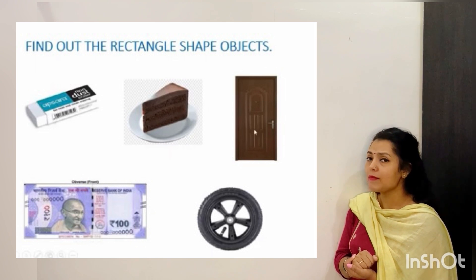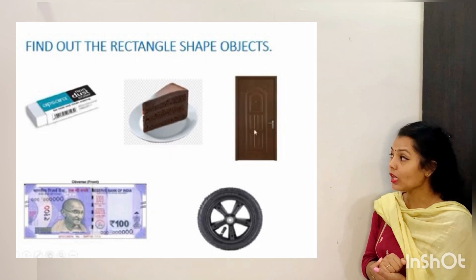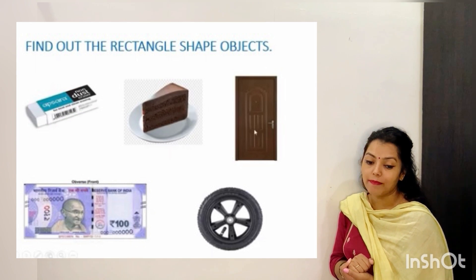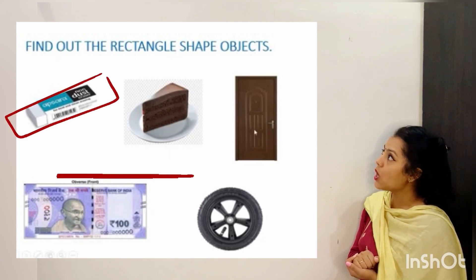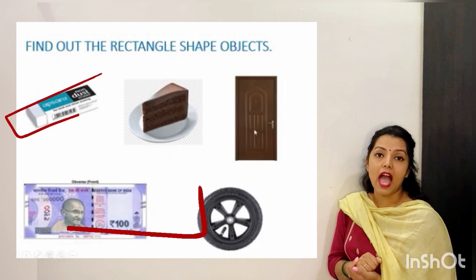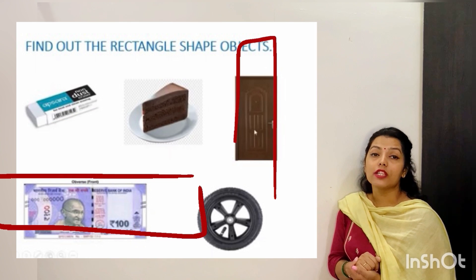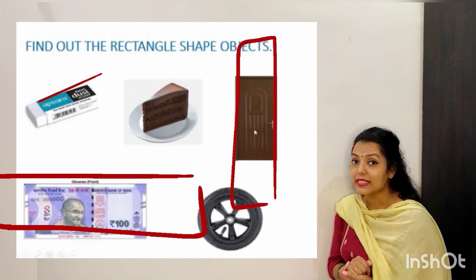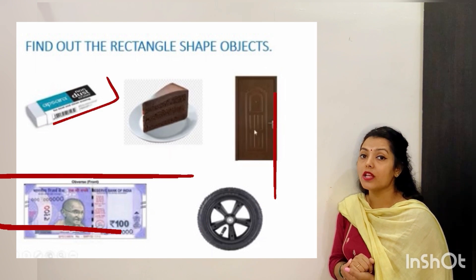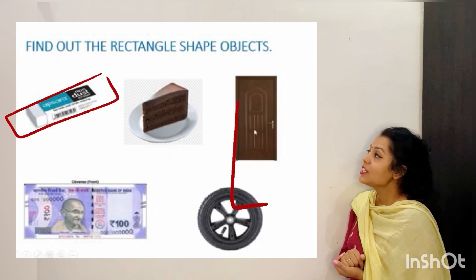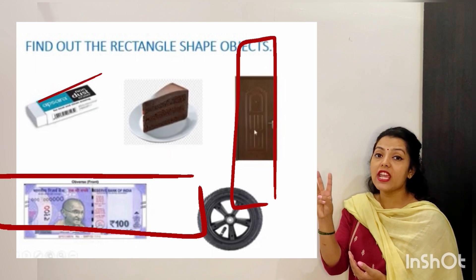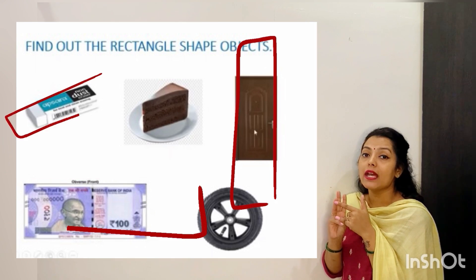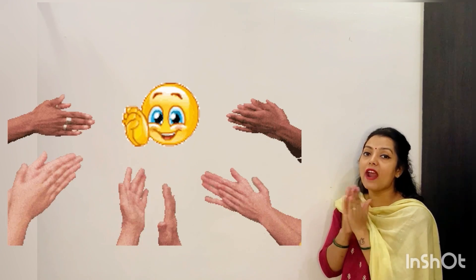Yes! Come let's guess it. We have eraser — yes, eraser is rectangle shape. Then we have this knot, and last we have door. The shape of the door is also rectangle. So we have three rectangle shapes over here — eraser, door and knot. Very good!